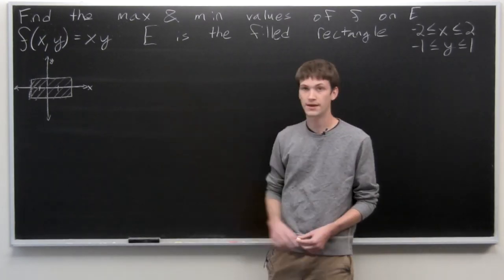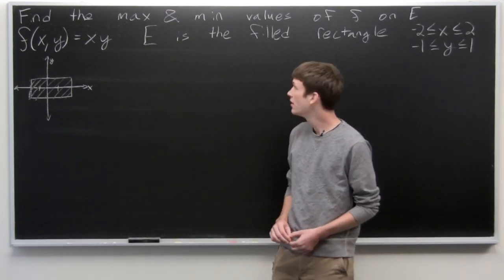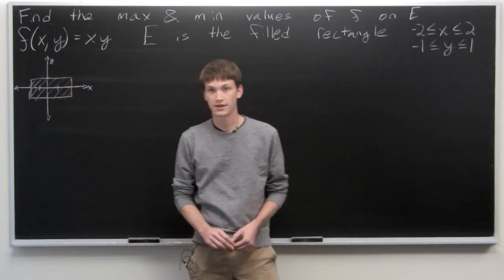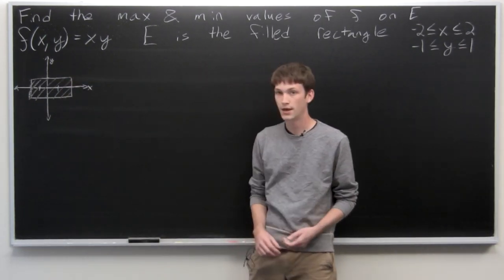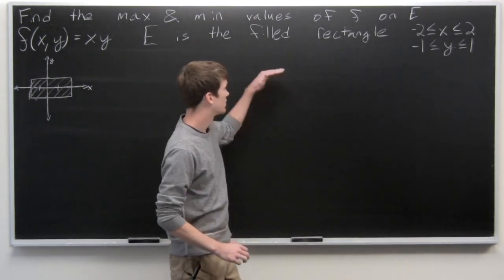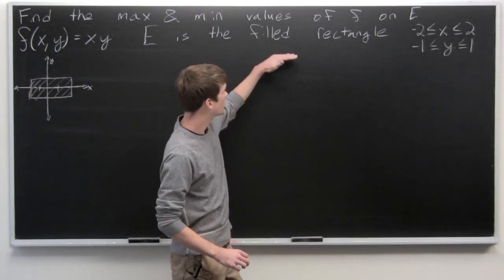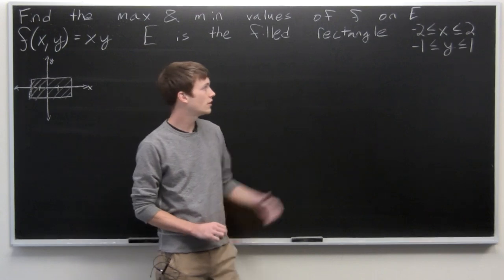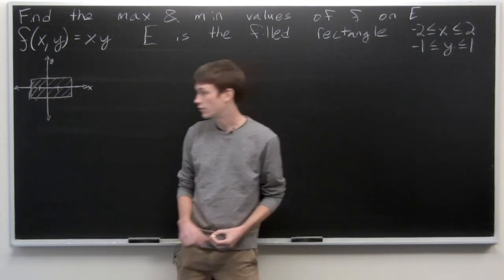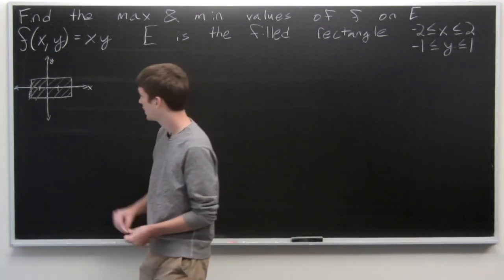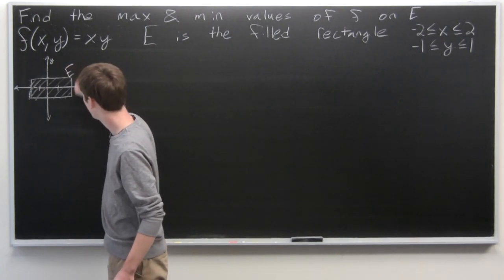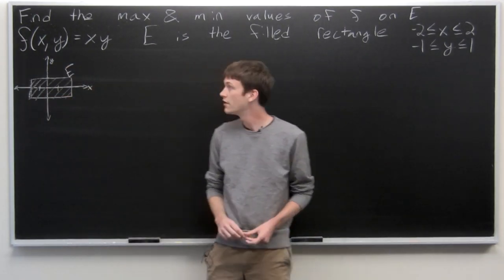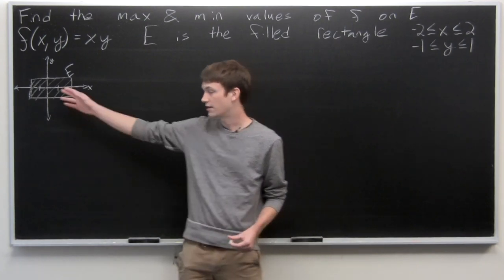In this problem, we're asked to find the max and min values of our function f, where f(x,y) is given as x times y. E is the region of the filled rectangle, where x is between negative 2 and 2, and y is between negative 1 and 1. I've just sketched the region E here, and we want to find the max value of f(x,y) in that region.